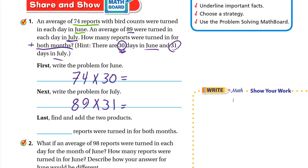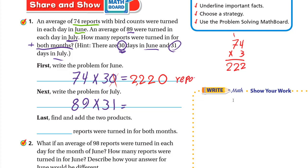For June: 74 reports times 30 days. Write the 0 and multiply 3 times 74. 3 times 4 is 12, write 2 carry 1; 3 times 7 is 21 plus 1 is 22. Writing 222 next to the 0 gives 2,220 reports in June.